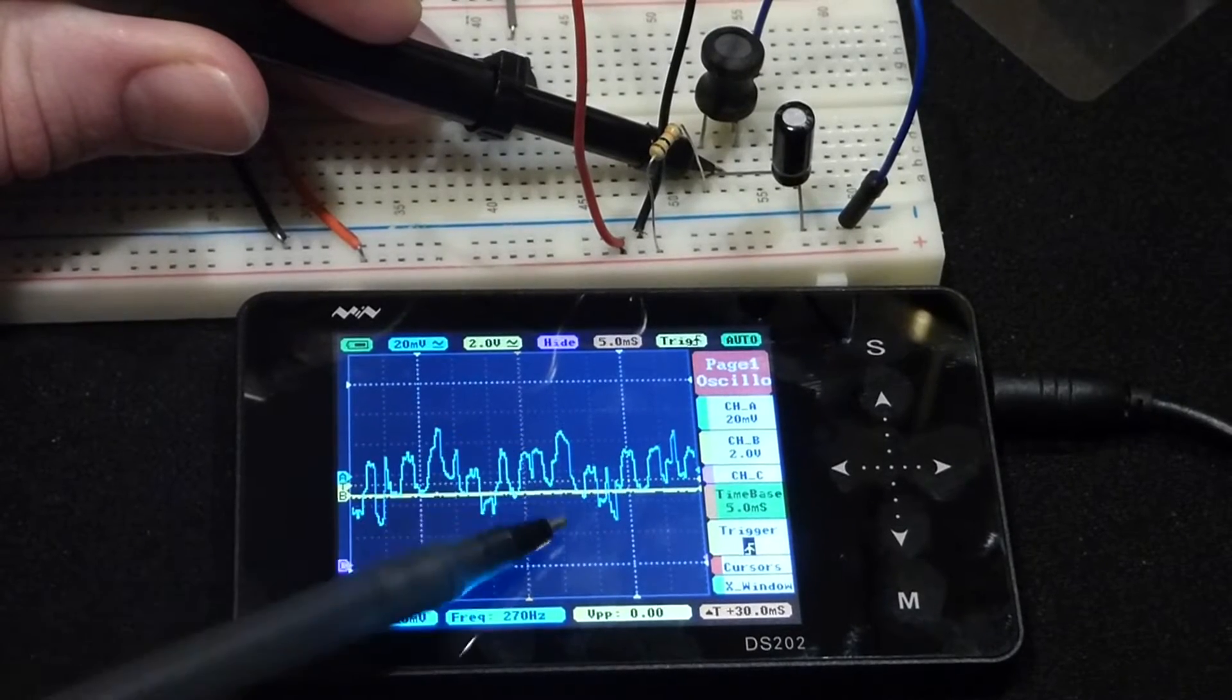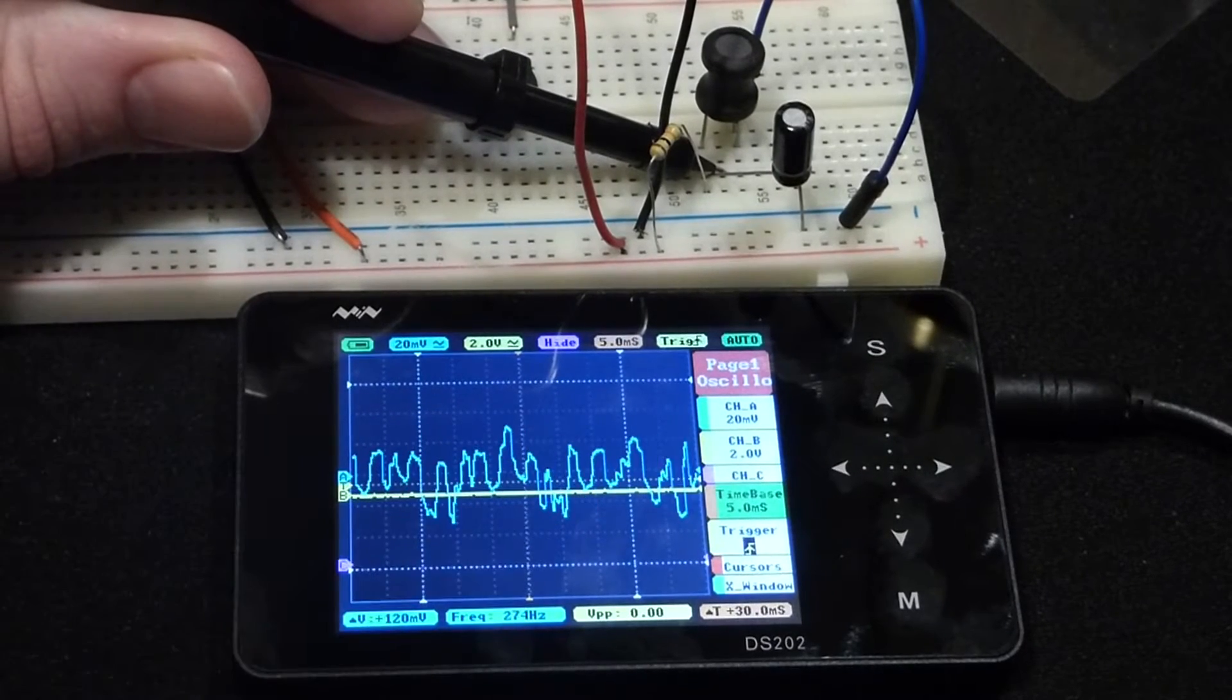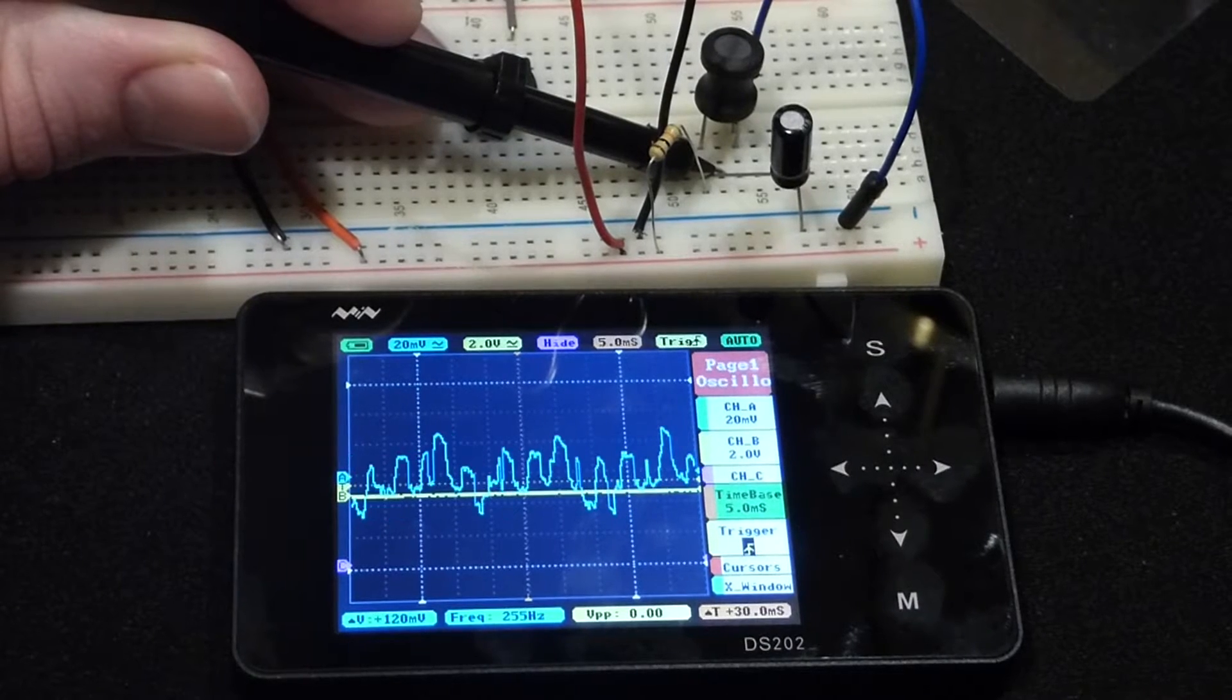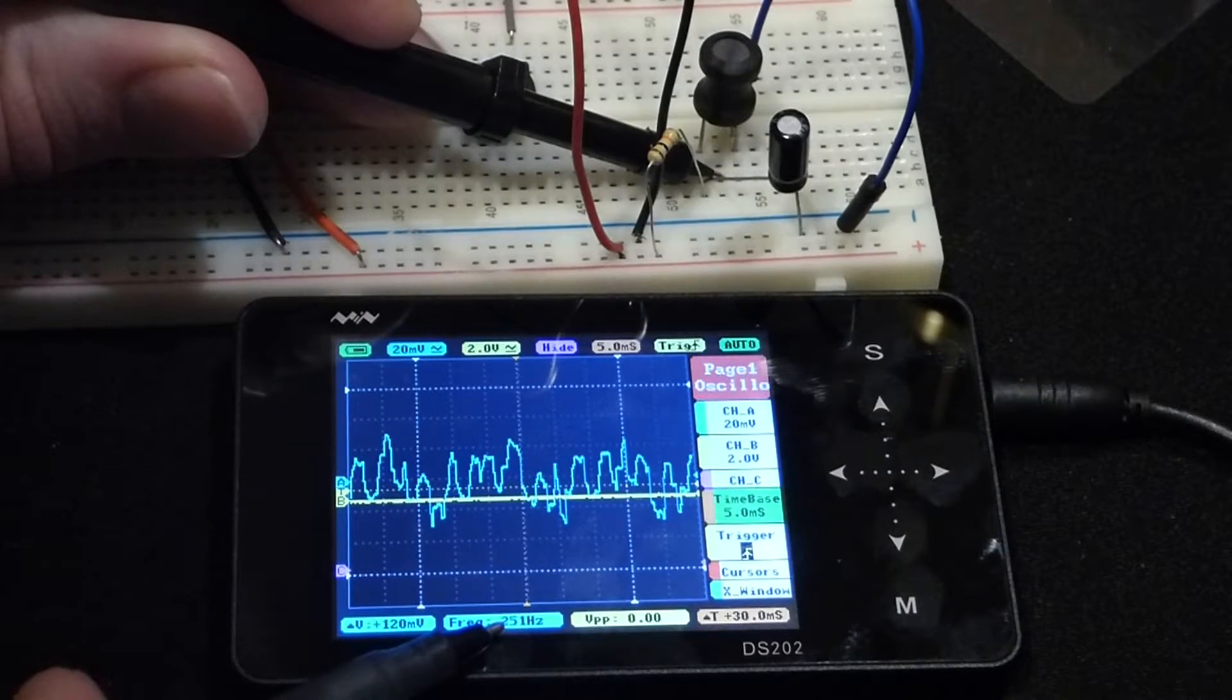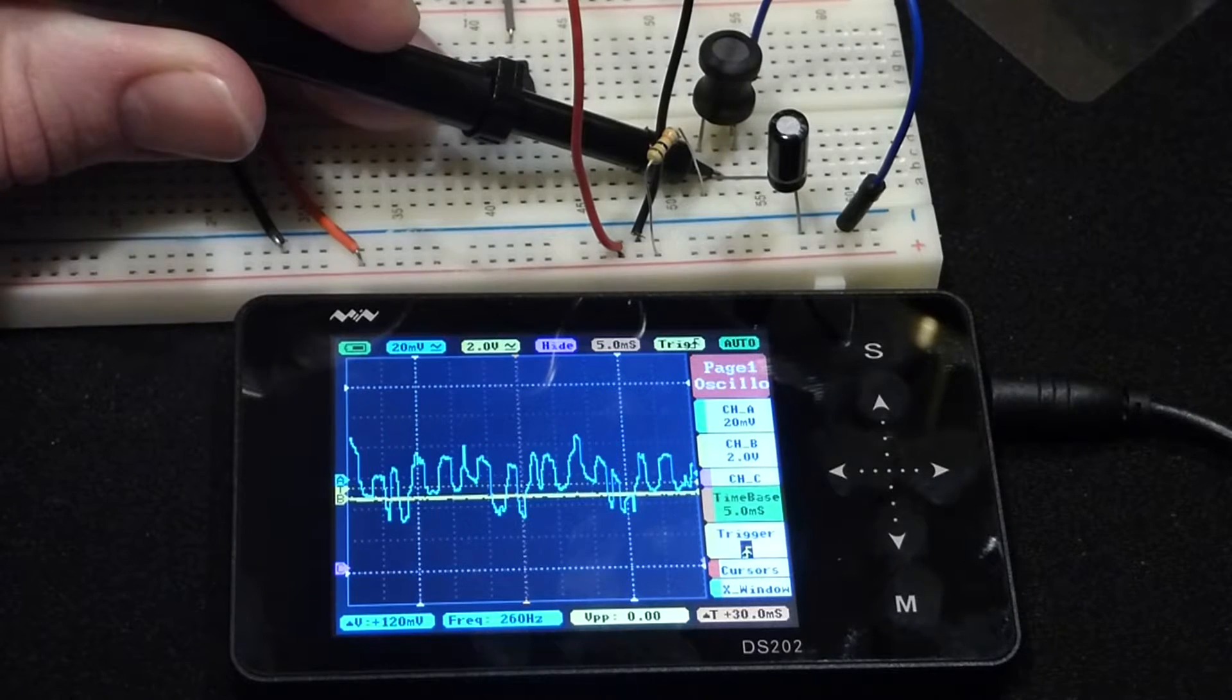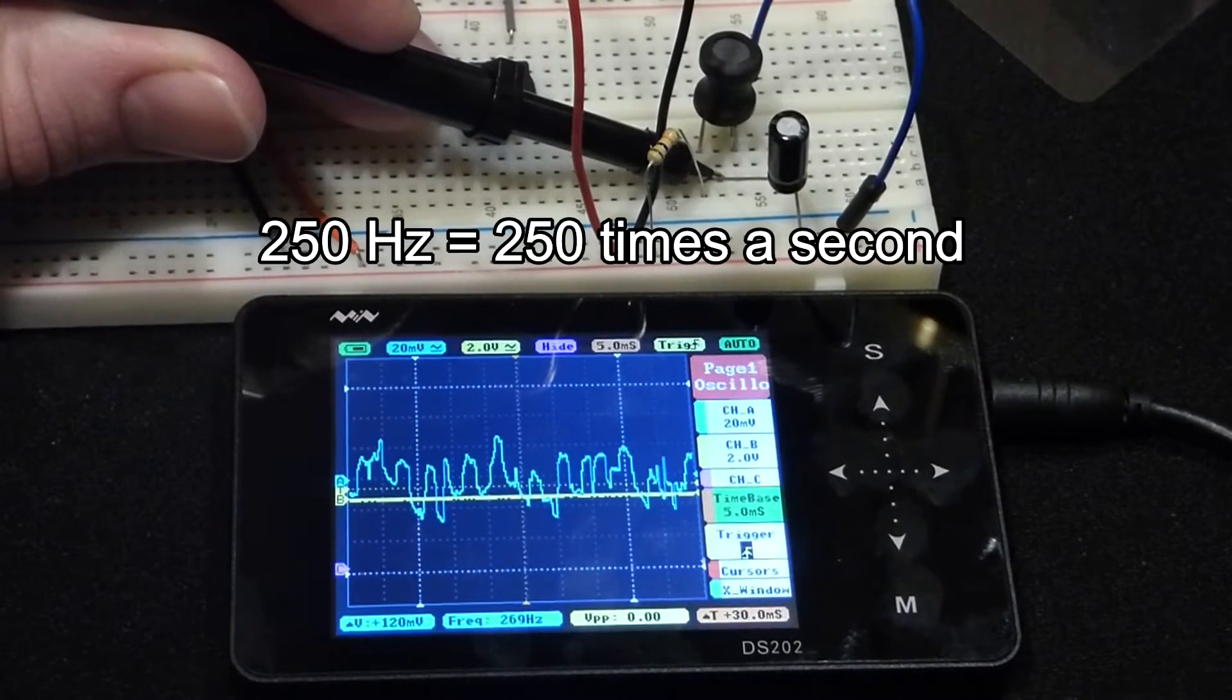This line going up and down means that each time it goes up and down, the capacitor charged and discharged a little. So it's charging and discharging really rapidly. Down here it says about 250 hertz, which means it's charging and discharging about 250 times a second.